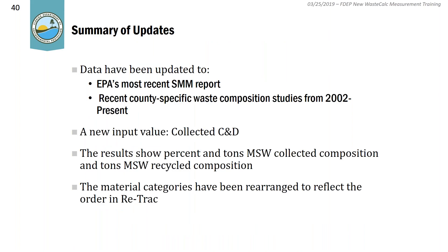A quick summary of the updates: all data in the new Waste Calc has been updated to EPA's most recent report, and county-specific waste composition data has been updated by collecting studies from 2002 to present. A new input value for collected C&D has been added. The output now shows both percent and tons MSW collected, as well as the sum of recycled composition. Material categories have been rearranged to reflect the order in retrack.